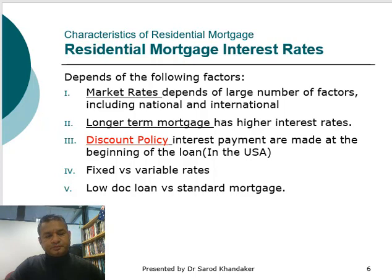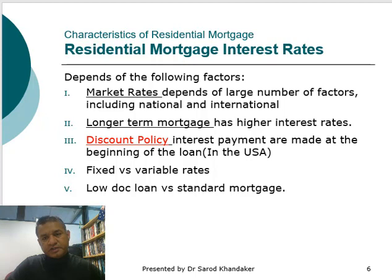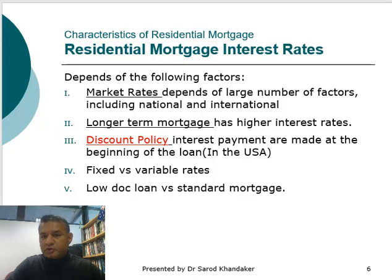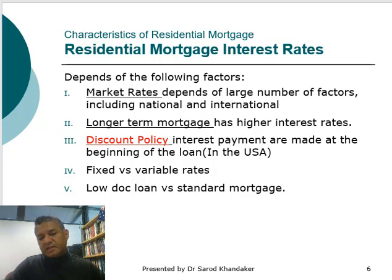Fixed versus variable rate: a loan can be fixed for a number of periods. For example, if Mr. XYZ purchases a property through a mortgage with a duration of 30 years, in Australia the interest rate could be fixed for up to 5 years. During that fixed period the interest rate will not change regardless of what happens in the mortgage market. On the other hand, in a variable rate loan, the interest rate changes if there is a change in the market interest rate.